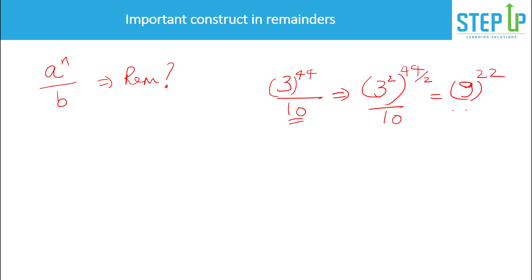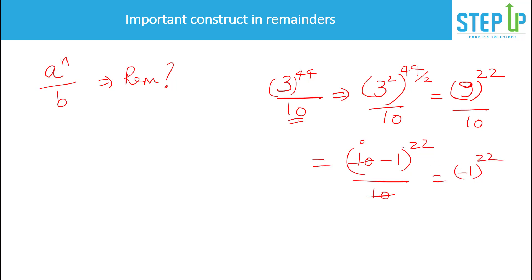When you expand (10 − 1)^22 divided by 10, every term with a factor of 10 gives remainder 0, so only (−1)^22 remains. Since 22 is even, (−1)^22 = 1. So the remainder is 1. The reason we write the base in the form (bm ± 1) is so that 1 raised to any power is trivially easy to evaluate.